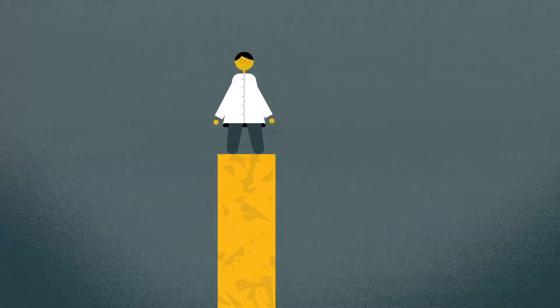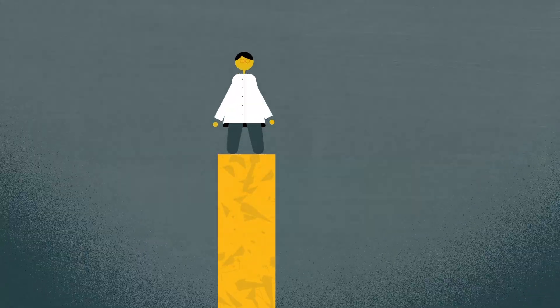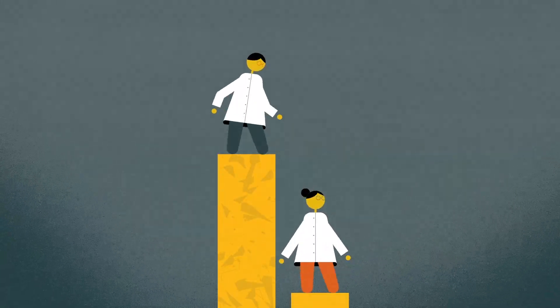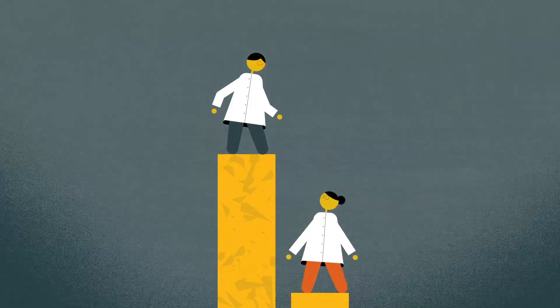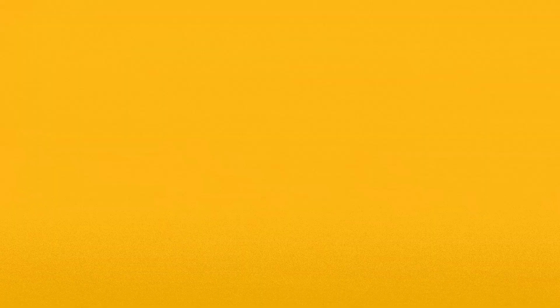The low retention and progression of women leads to the lack of females at the professorial level. That means that the young females coming into academia don't have enough role models, and that makes this vicious circle continue.